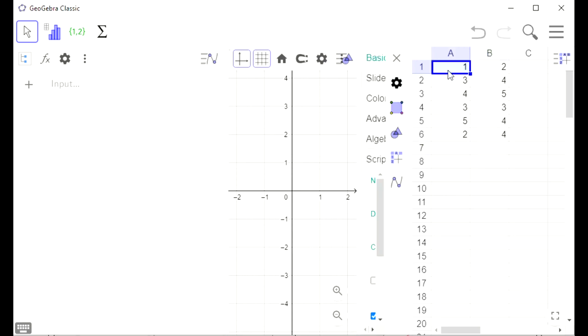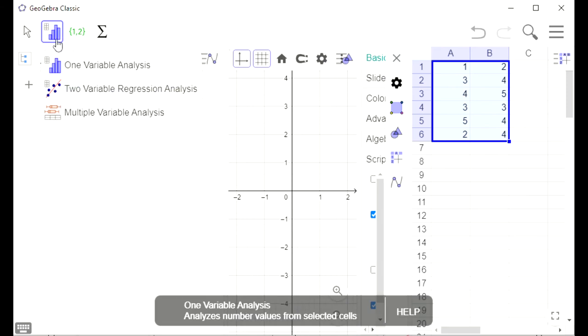After we have the data set in the spreadsheet, we highlight the data, click on the icon here, and go to two variable regression analysis.